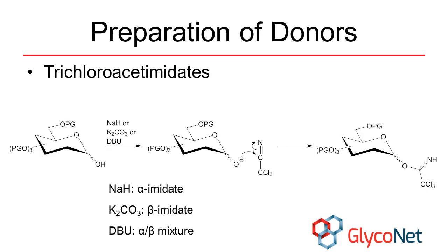Trichloroacetimidates are prepared by reacting the reducing sugar with trichloroacetonitrile under basic conditions. Depending upon the base used, different anomers can be obtained.